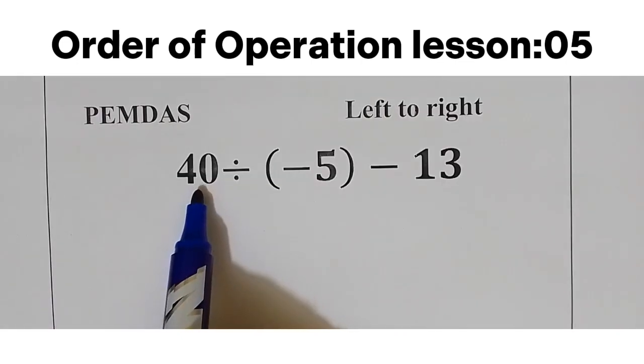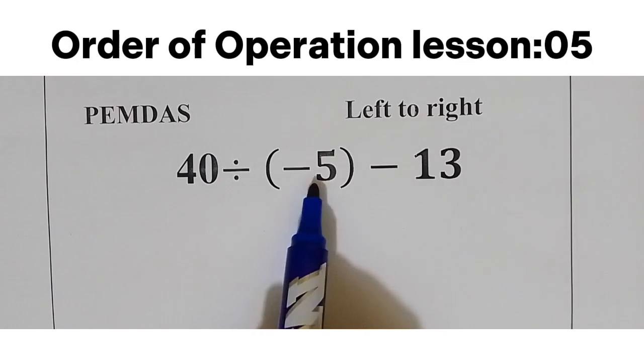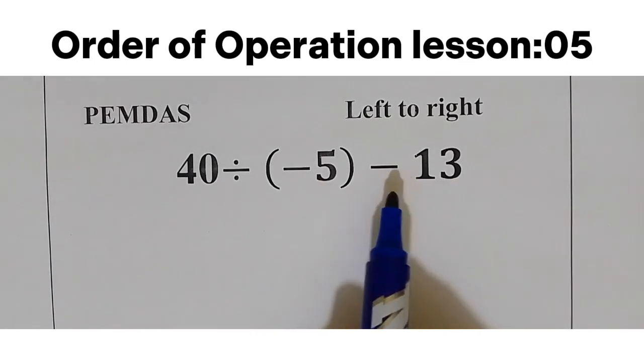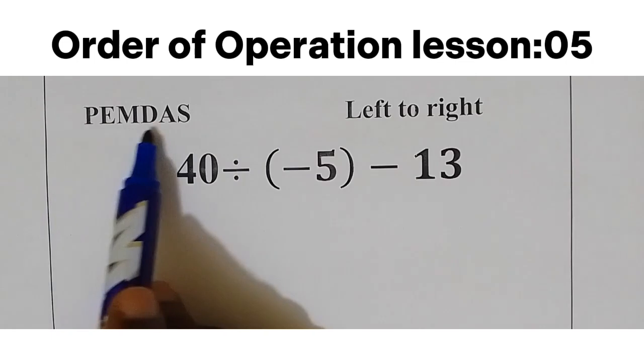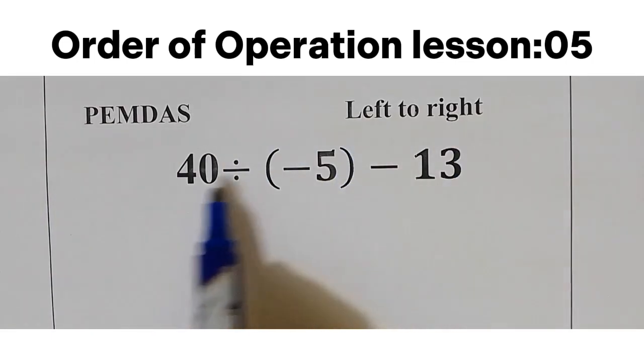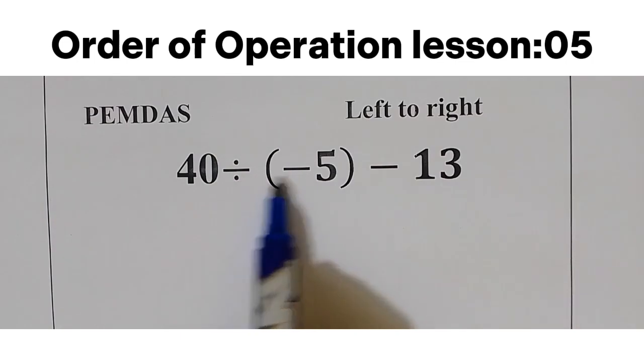Alright, let's go to question number 2. We have 40 divide by negative 5, take away 13. Remember, we are led by PEMDAS and we are working from left to right.